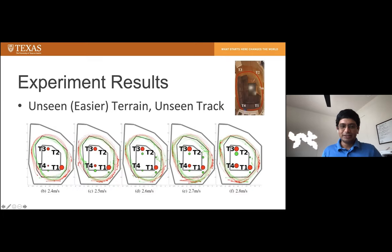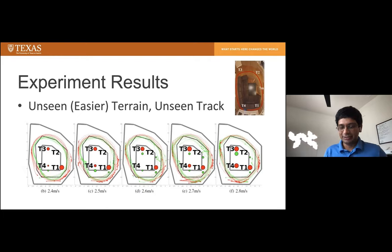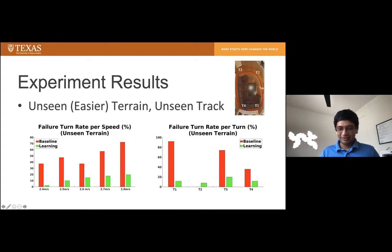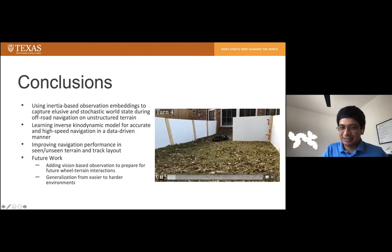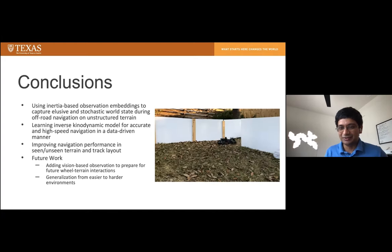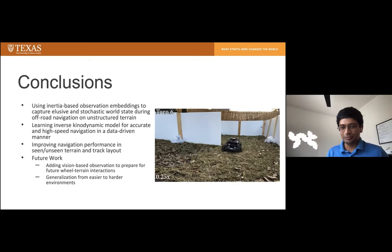We also deployed the model on an easier but unknown indoor terrain — essentially in Chuei Suzhou's living room — and ran the car in laps. The same ordering holds: the learned model outperforms both the baseline and the ablation. You can see the car taking turns with significant lateral movement, and the inverse kinodynamic function accounts for that by modifying the steering accordingly at high speed.